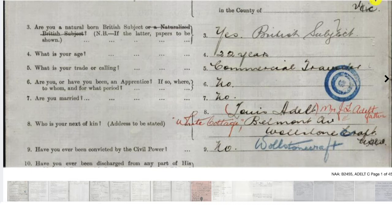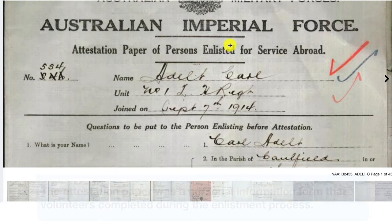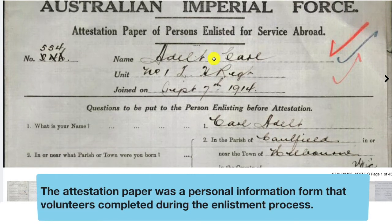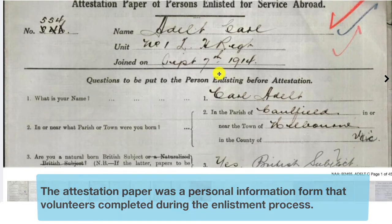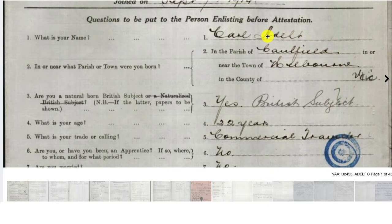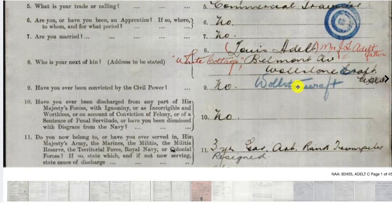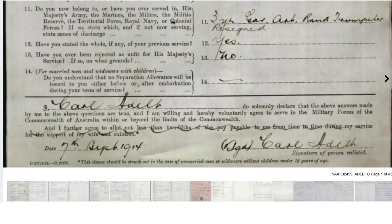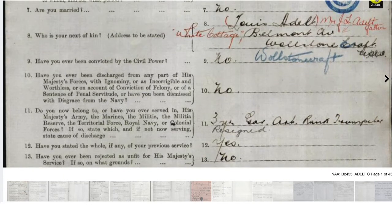Zooming in, this is the attestation paper. Carl enlisted early in 1914. It includes all his biographical details: where he was born in Melbourne, his age of 22, his occupation as a commercial traveller, his next of kin and their address at the White Cottage of Wollstonecraft, and his signature declaring that the information is true and he is willing to enlist in the First World War.